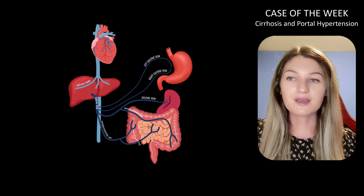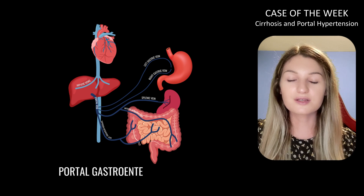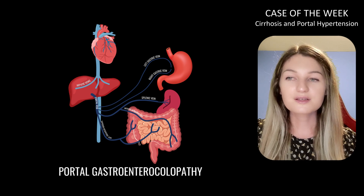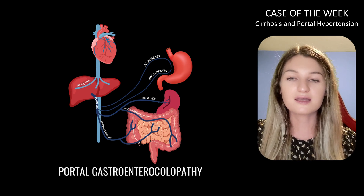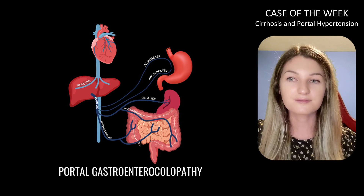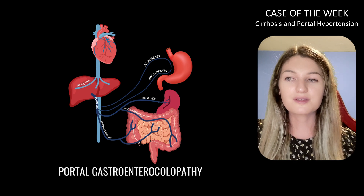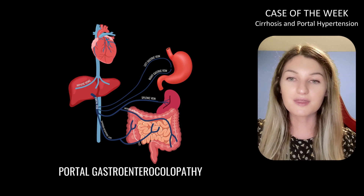Bowel wall thickening and edema is also commonly seen in portal hypertension and is collectively termed portal gastroenteroculopathy. This occurs due to dilatation and increased permeability of the submucosal veins as the pressure gradients in the superior mesenteric vein and inferior mesenteric vein increase. This is important to know so that you don't inadvertently suggest that a patient has acute enteritis or colitis when that might not be the case.